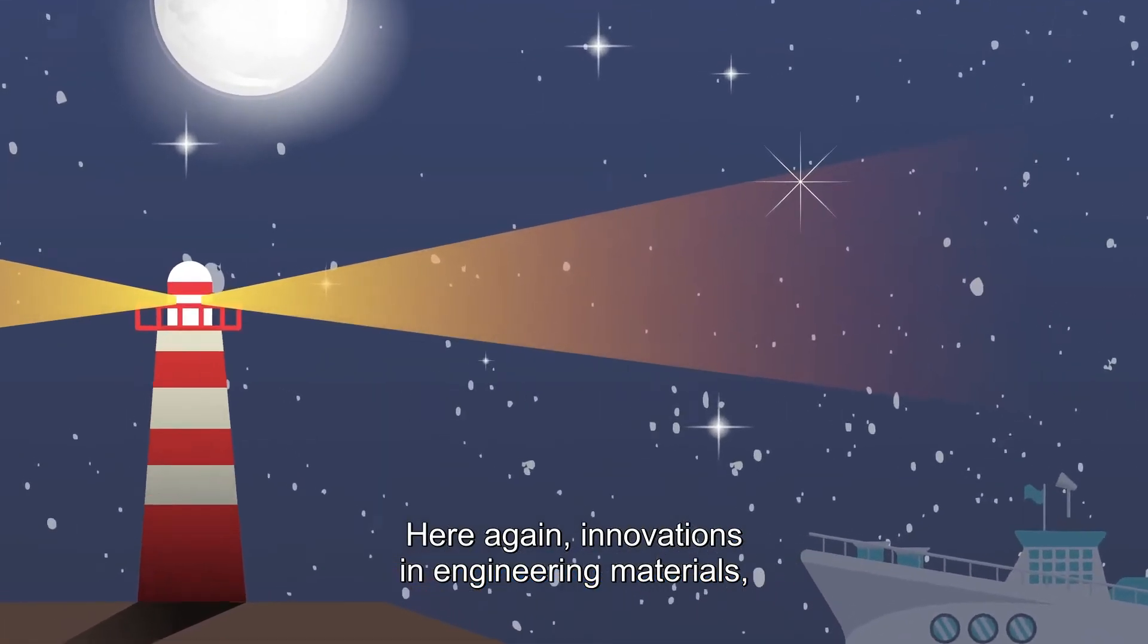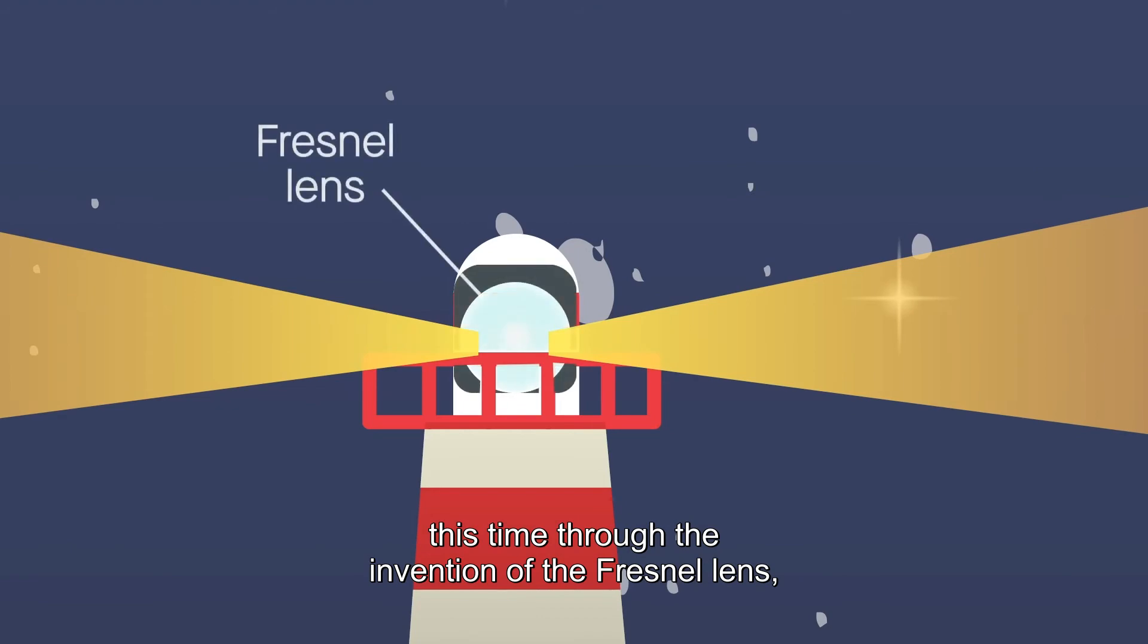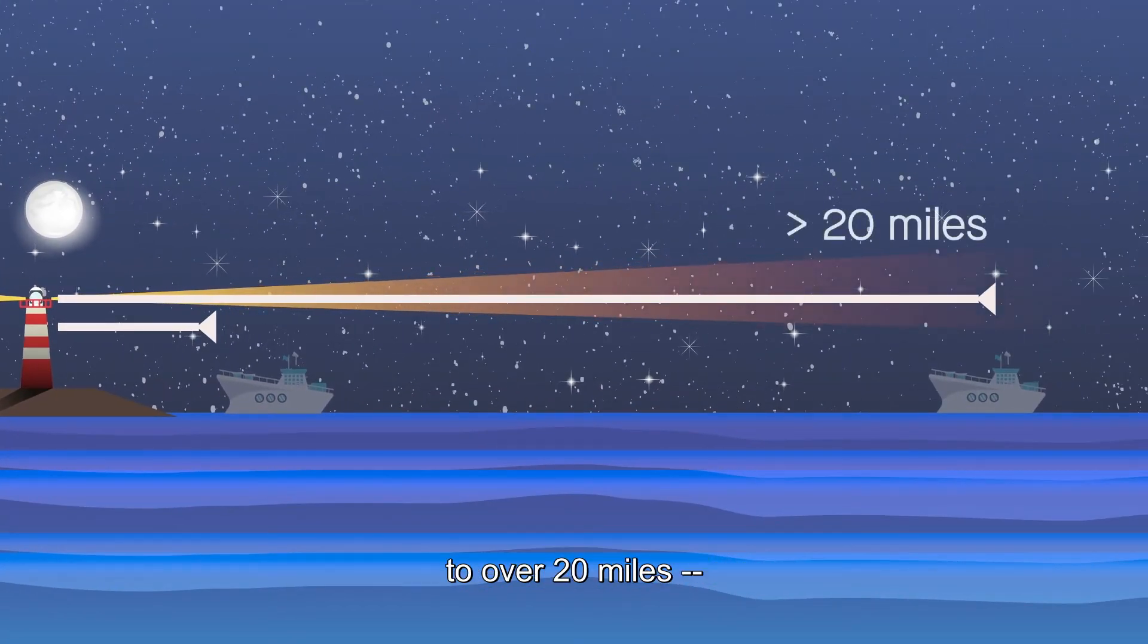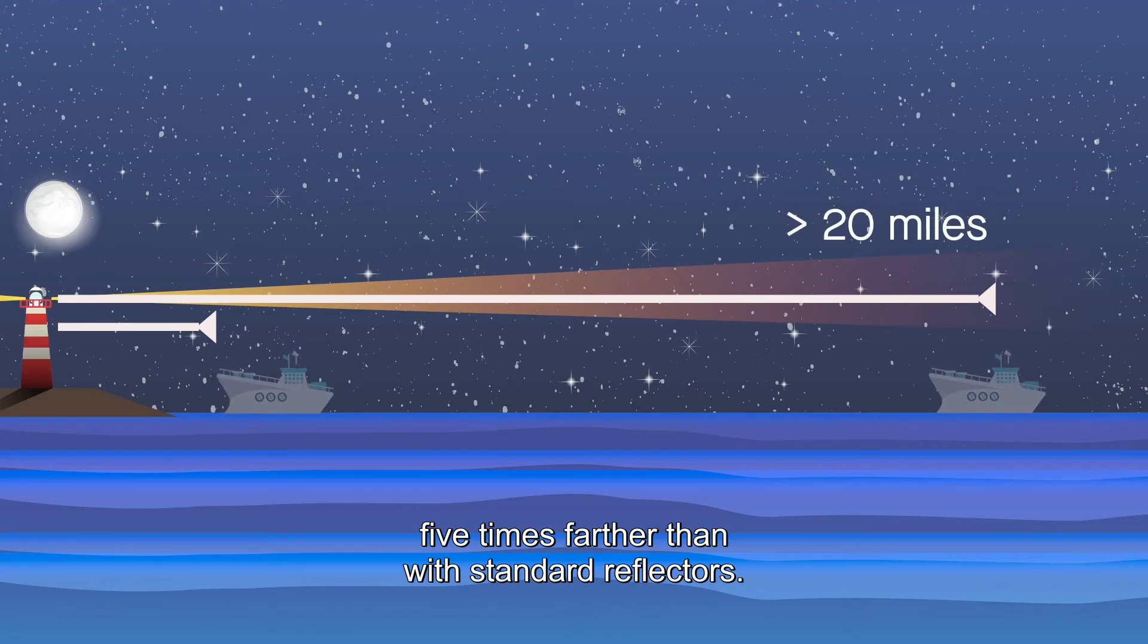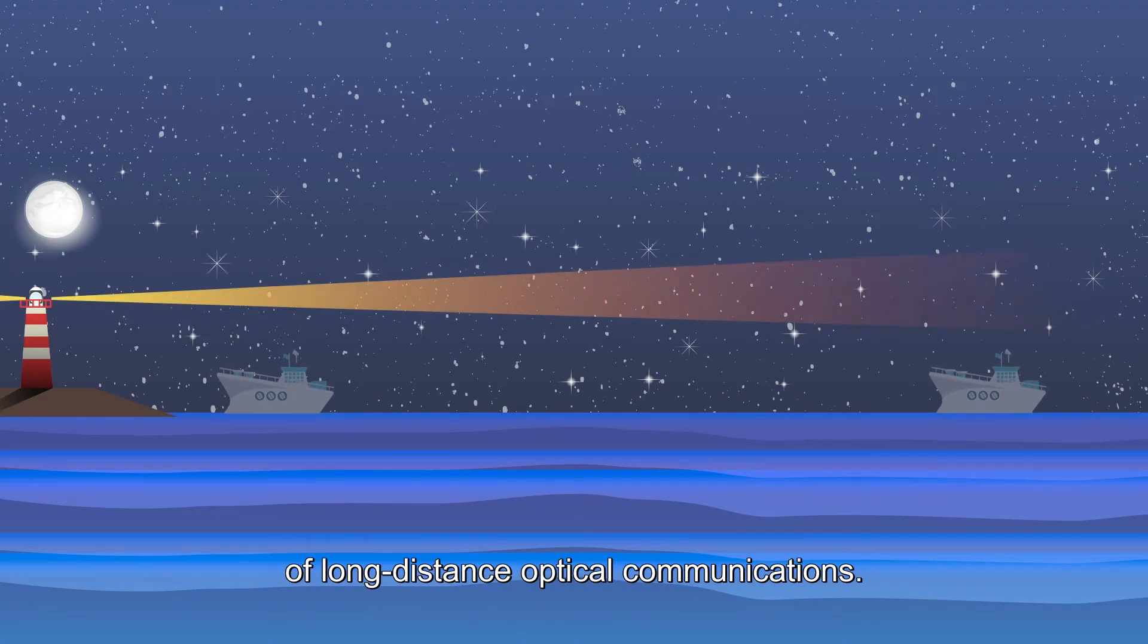Here again, innovations in engineering materials, this time through the invention of the Fresnel lens, enabled the distance to be increased substantially to over 20 miles, five times farther than with standard reflectors. These lighthouse signals were one of the first implementations of long distance optical communications.